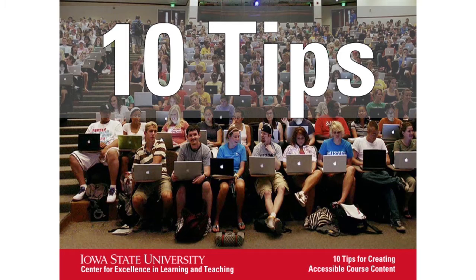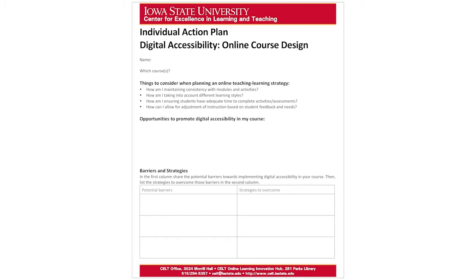Our real focus is for faculty members. To help frame what we're going to be doing today, if you look in your packet, you should have a handout that is the individual action plan. Our intent in creating this is so by the time we're done with the workshop, you've got some actionable items that you can go back and either work with a faculty member on, or as a faculty member have something to start working on. As we go through this session, think about opportunities to promote digital accessibility in your course, and also about barriers that are going to limit or make it more difficult for you to do that. If you can think about some strategies to overcome those, you're already a step ahead.